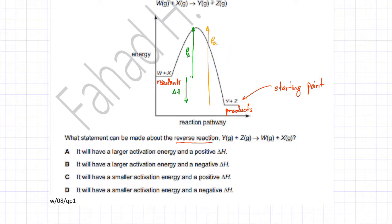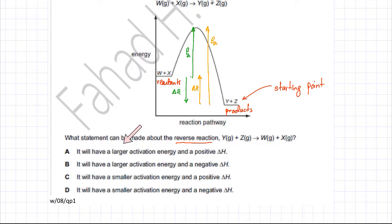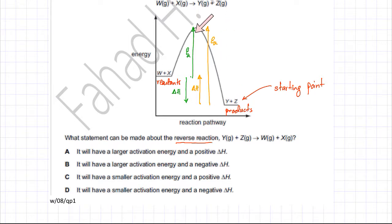The overall enthalpy change for the reverse reaction goes from the products back to the reactants. Looking at both activation energies, the forward activation energy is smaller, so the reverse reaction has a larger activation energy. Therefore the statement 'it will have a larger activation energy' is correct.